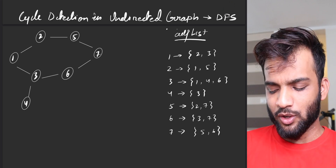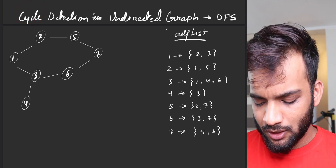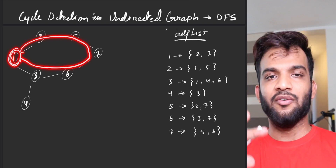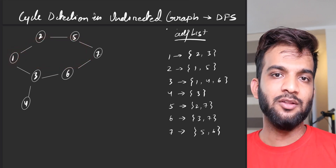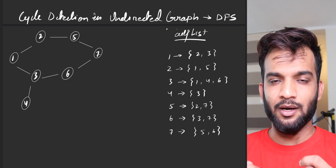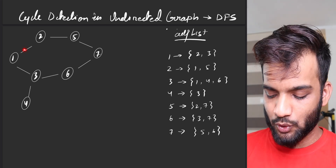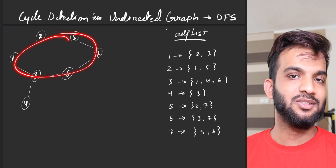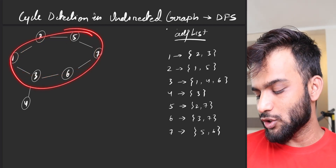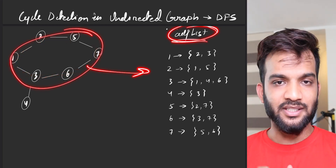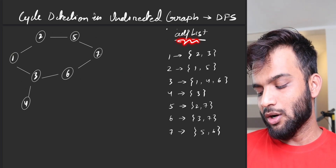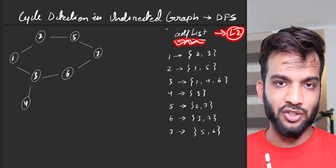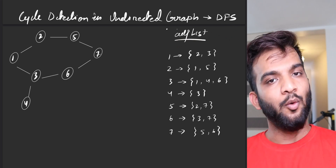So what is a cycle? It's very simple. If you start from a node and you come back to that node via any path without breaking any edge, that is what you call a cycle. So this graph definitely has a cycle. For this graph this will be the corresponding adjacency list. If you don't know how to write an adjacency list, lecture 2 or lecture 3 is what you need to go back and watch.